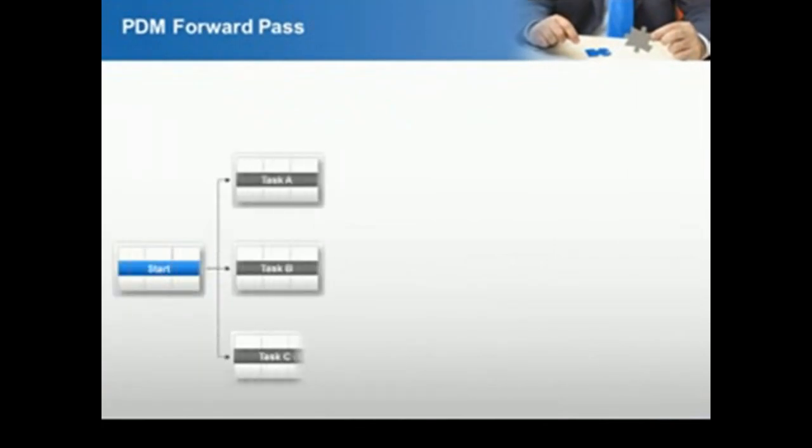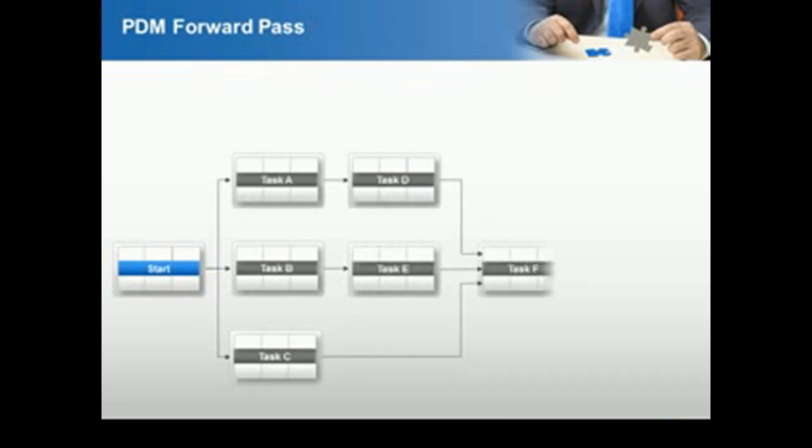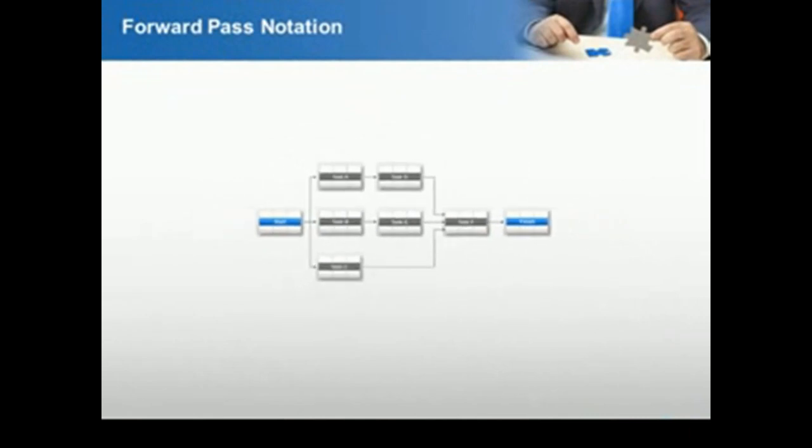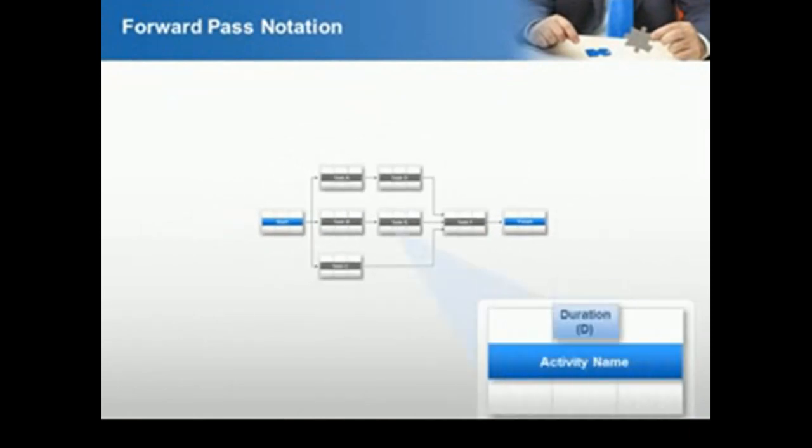To find this, project managers use the critical path method or algorithm to define the least amount of time necessary to complete each task with the least amount of slack. The critical path method, also known as critical path analysis, is a scheduling procedure that uses a network diagram to depict a project and the sequences of tasks required to complete it.